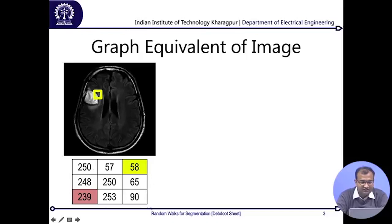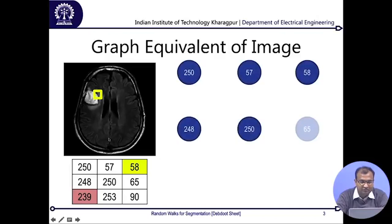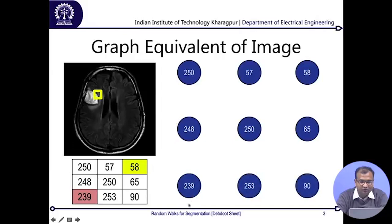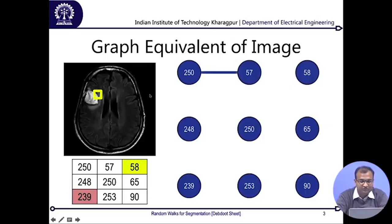This 3x3 sub-matrix of the image can be represented as an equivalent graph by plotting each pixel value as one node of the graph. Initially you will have one small blob, also called a node, and each node holds the intensity of each pixel. The coordinate location of each node is the same as the coordinate location of the corresponding pixel. Once we put down all the nodes, the next thing is to draw connections between these nodes, which are called edges.